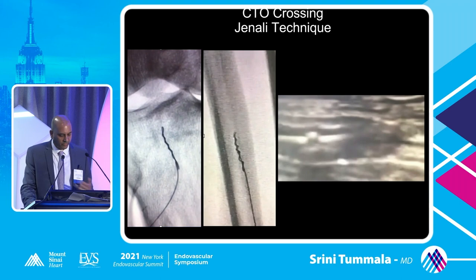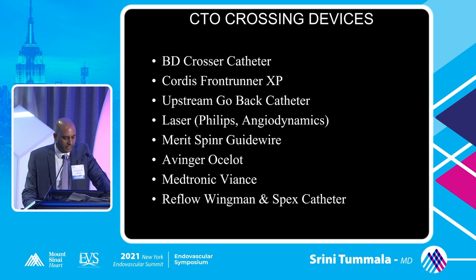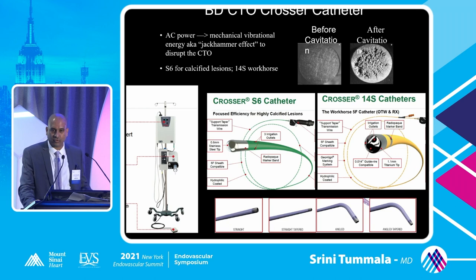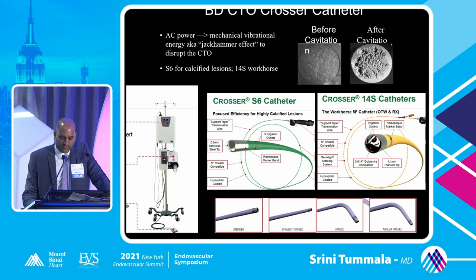What about crossing devices? We have a whole host of devices. The BARD or BD CTO crosser catheter requires a generator and converts AC power into mechanical vibrational energy — a jackhammer-type effect — with some microbubble disruption and cavitation. It comes with two devices: the S6 for highly calcified lesions and the 14S as the workhorse catheter, using various shaped catheters to guide the jackhammer through the CTO.